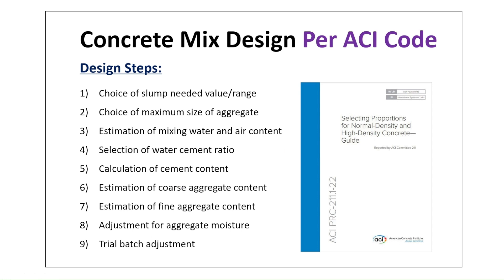Concrete mix design steps: first, the choice of slump for the needed value or range (minimum and maximum). Second, choice of maximum size of aggregate. Third, estimation of mixing water and air content. Fourth, selection of water-cement ratio. Fifth, calculation of cement content. Sixth, estimation of coarse aggregate content. Seventh, estimation of fine aggregate content. Eighth, adjustment for aggregate moisture if needed. Ninth, trial batch adjustment. Our reference code is ACI 211.1-22: Selecting Proportions for Normal Density and High Density Concrete Guide.